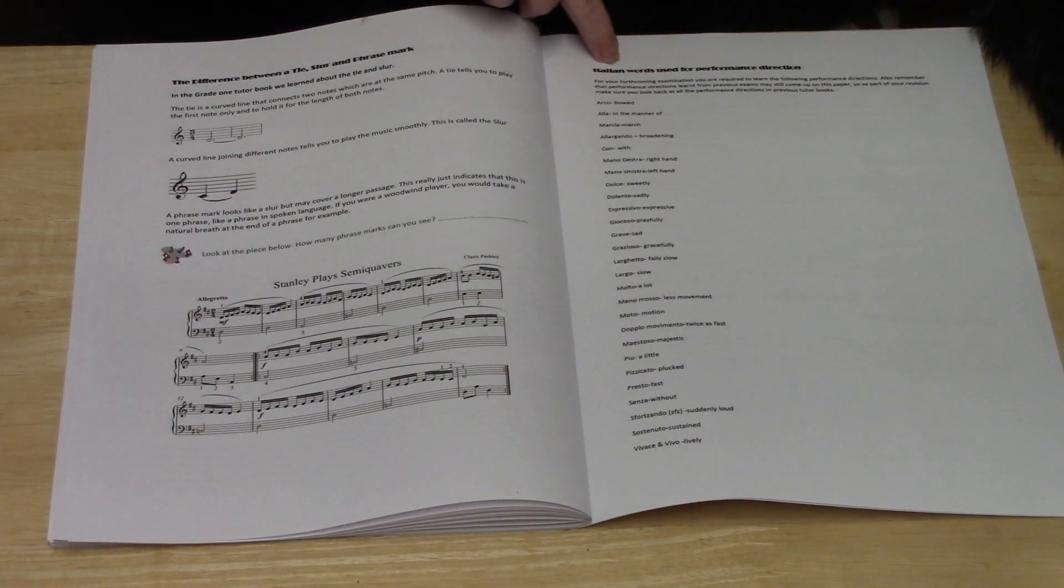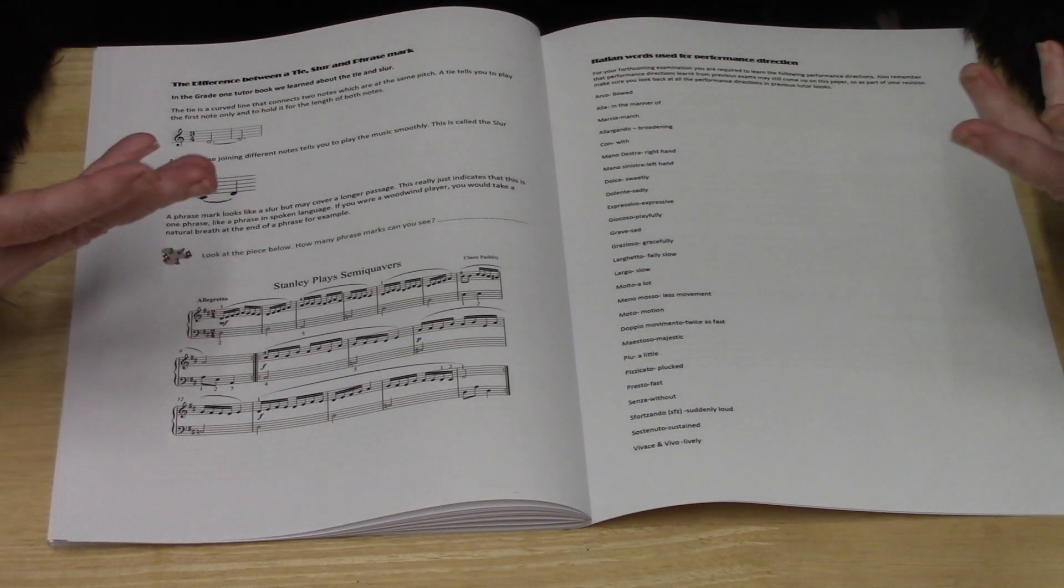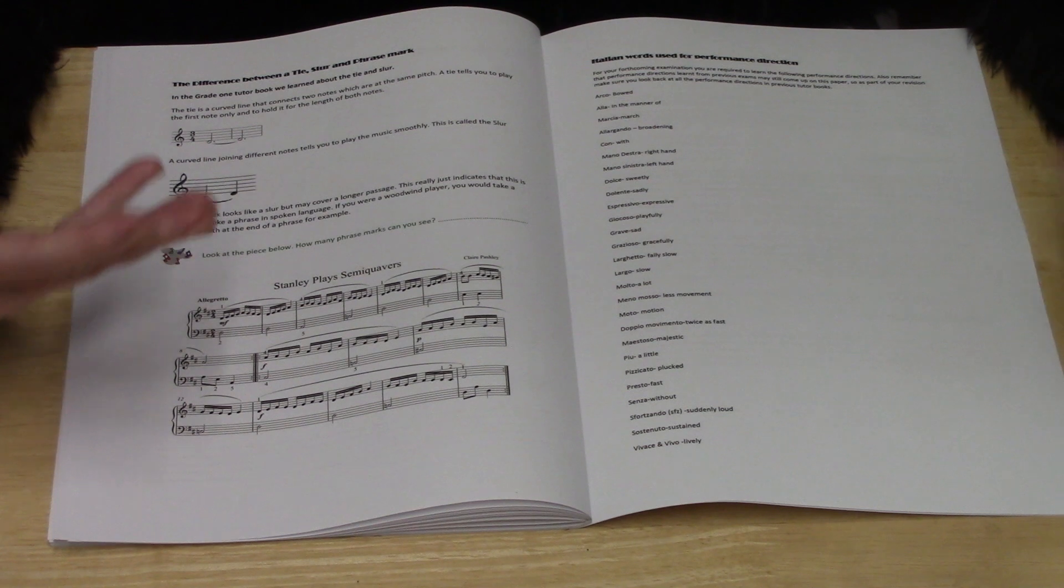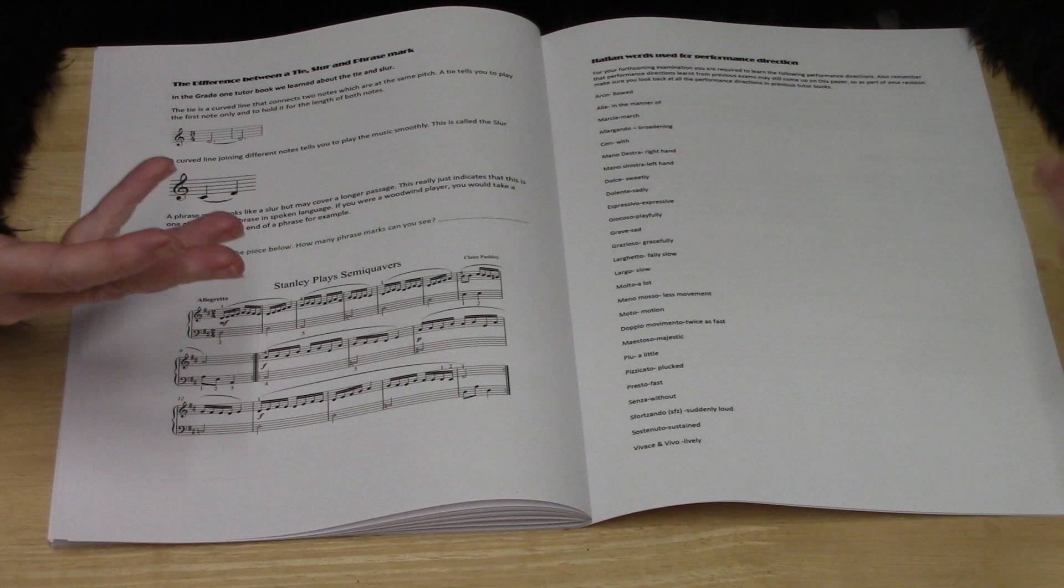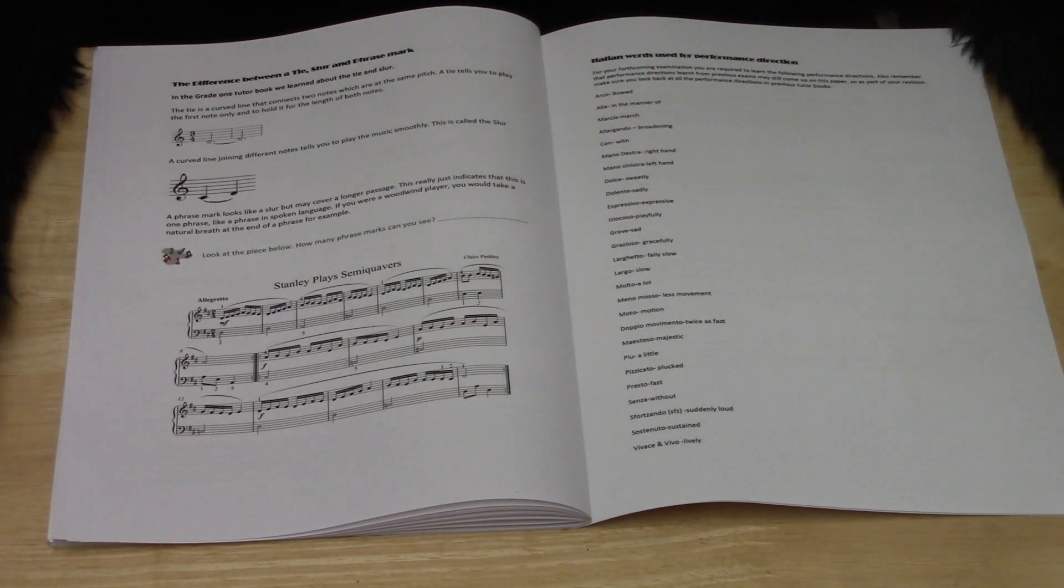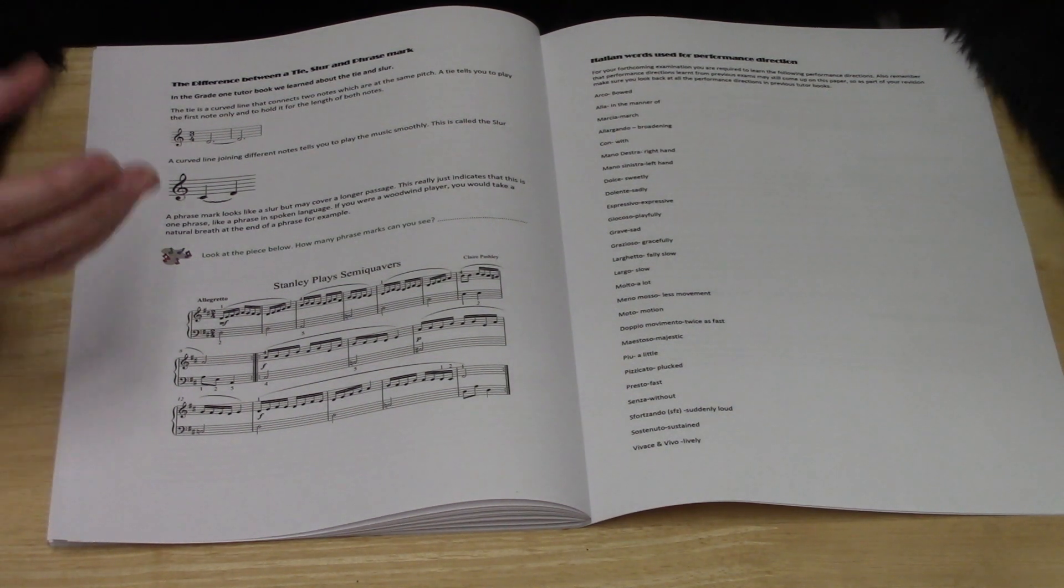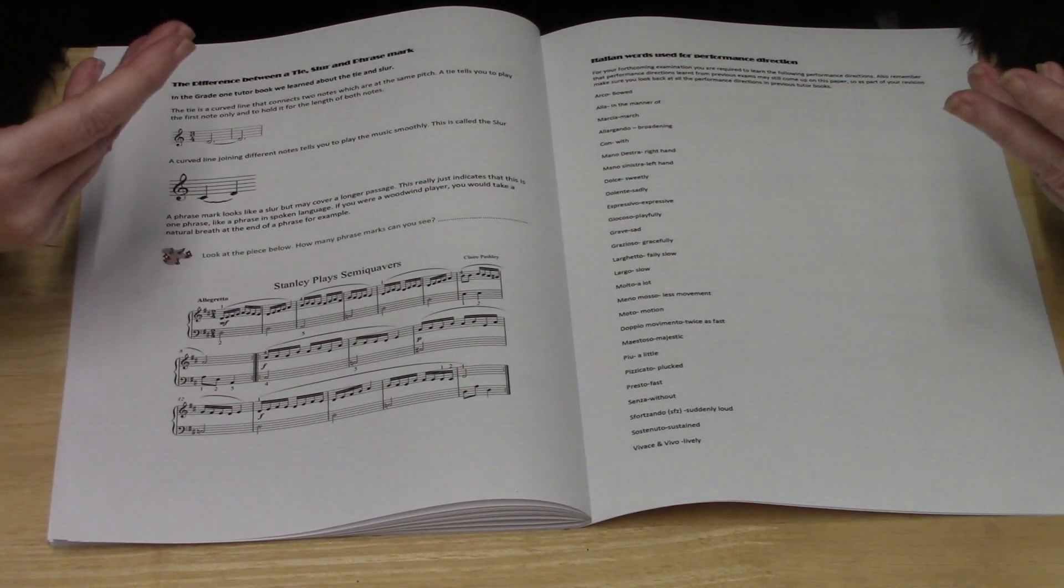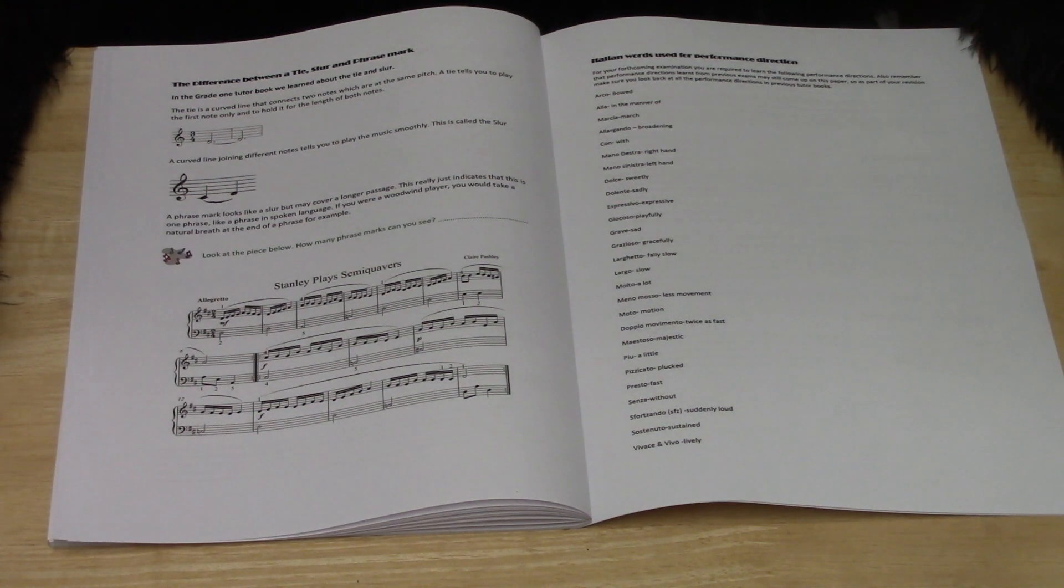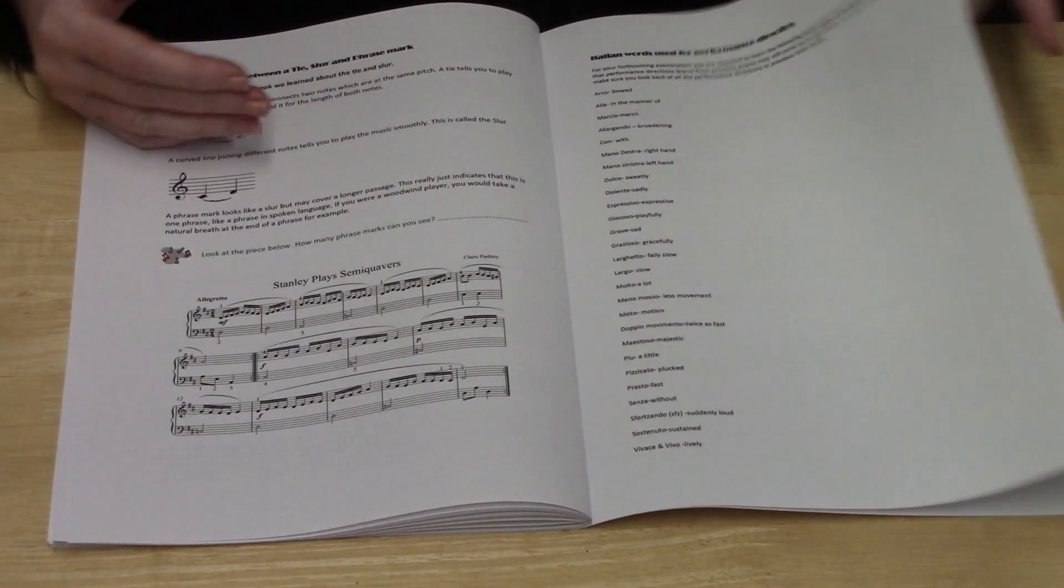Now moving on to Italian words used for performance direction. What you've got to remember for this exam is there's a lot of words to learn. Try and revise as many as you can because any of the following may come up. Also remember that any of the words from previous grades, including grade one and the first steps, may come up again on this exam sheet. So you have to revise all the words you've learnt in previous grades as well. You've got a whole list of them shown on this page here.